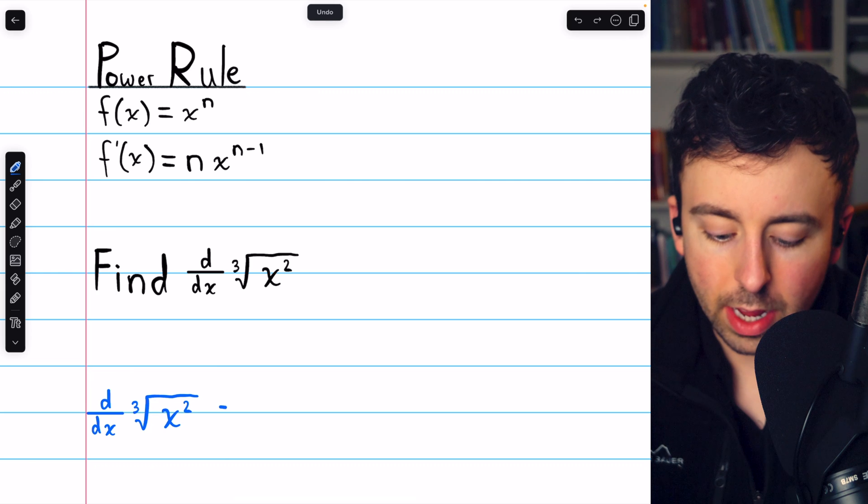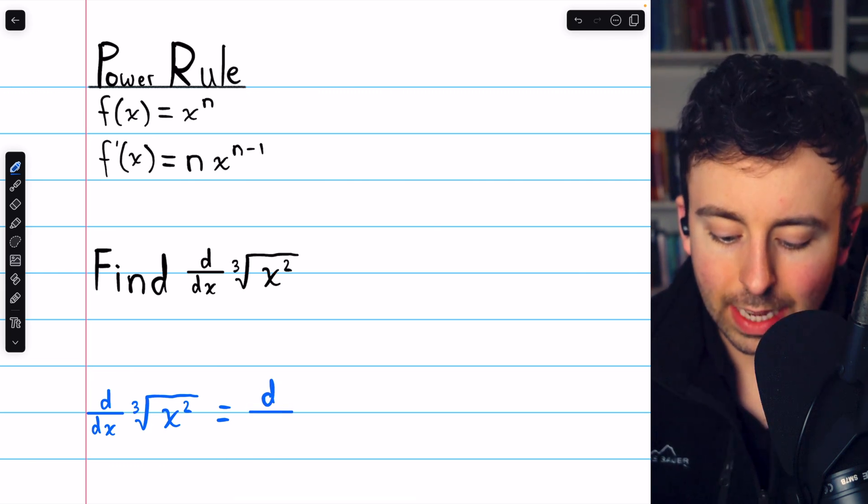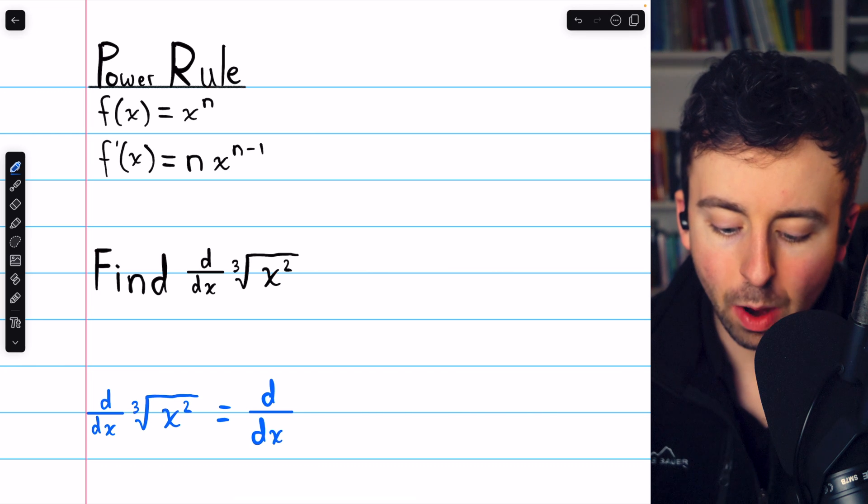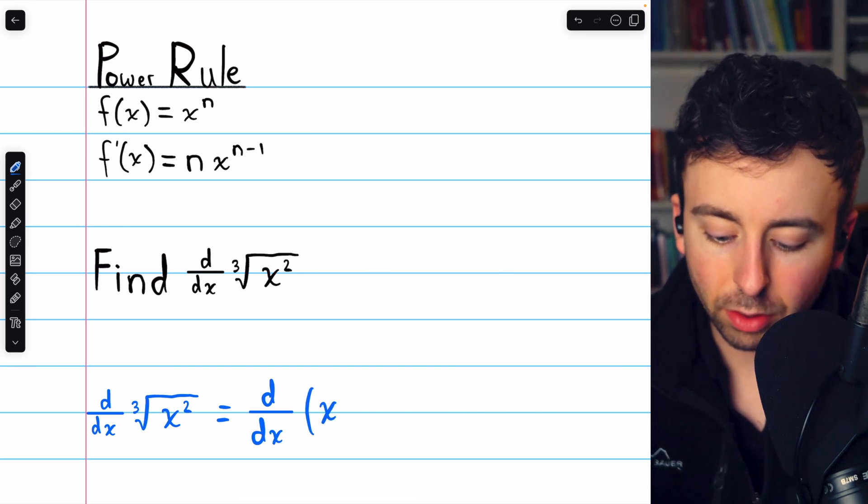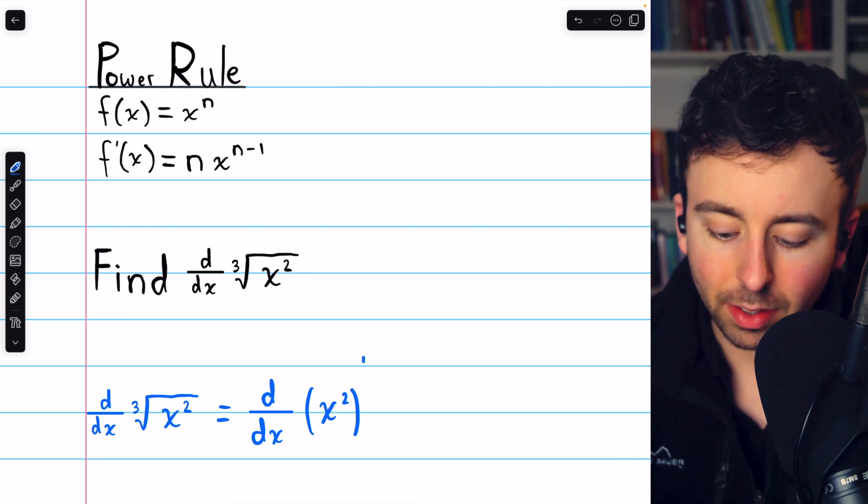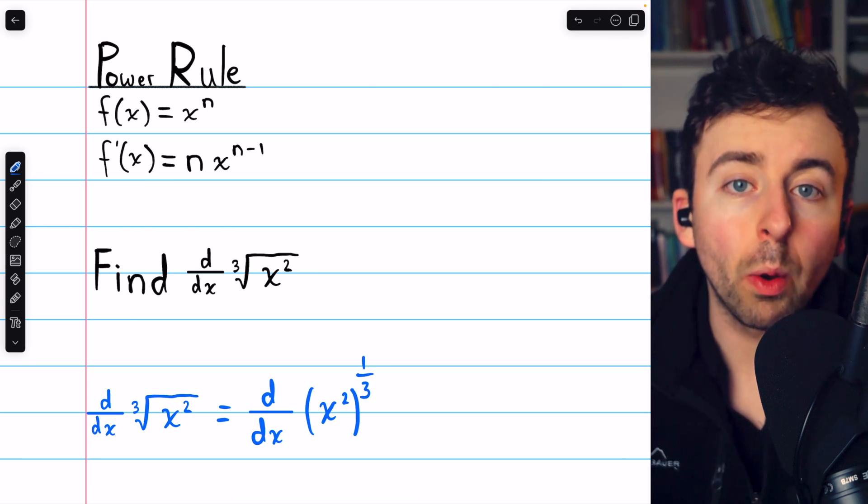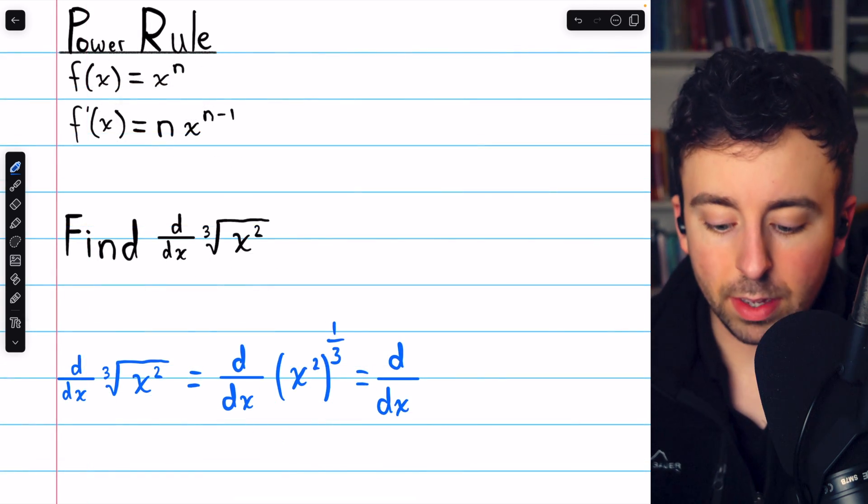Beginning our work down here in blue, hopefully you recall that a cube root is the same as having a power of one-third. So the cube root of x squared is the same as x squared to the power of one-third. But this can be simplified.